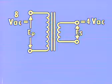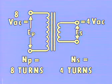Let's demonstrate with some examples. In this example, 8 volts across the primary of 8 turns results in an induced voltage per turn of 1 volt. Since the secondary has 4 turns, the secondary voltage is 4 volts.